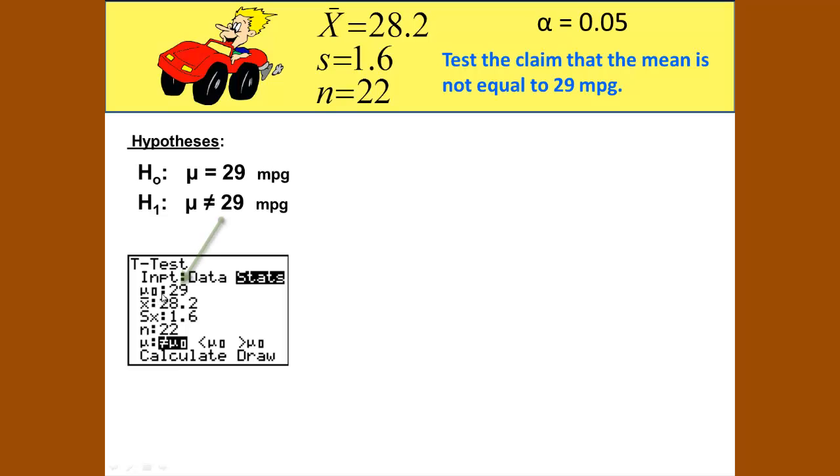Mu sub 0 is what we are putting in the null hypothesis, which is the 29. X bar is our sample mean, which is 28.2. The sample standard deviation is 1.6. Our sample size is 22. We are testing that mu is not equal to, and then choosing calculate and then draw.